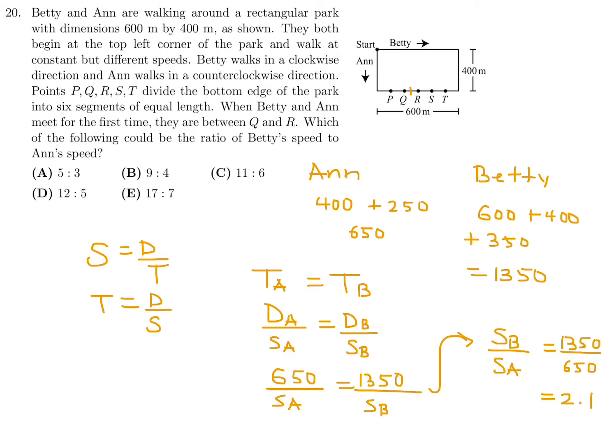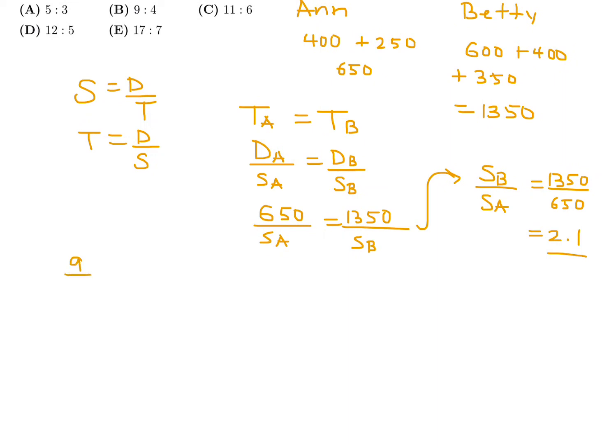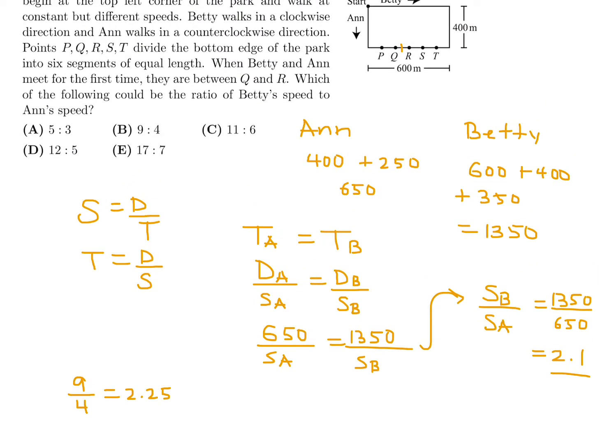So now if I want to get SB, the Betty speed over SA, it would just be 1350 over 650, and that is approximately 2.1. So which one of these is close to 2.1, closest to 2.1? The answer to that, if you get out a calculator - 5 divided by 3, 9 divided by 4, and so on - you'll find that the one that's closest to 2.1, which is what I got, is this one: 9 over 4. But it's not equal to 2.1. 9 over 4 is actually equal to 2.25. Now you can say, okay, I'll take a chance and let's just circle it and move on, or you can get a 100% conclusion.